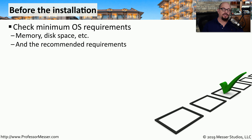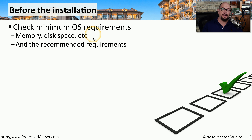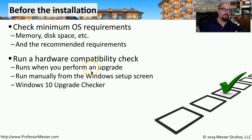Before even starting the installation, there's still a lot of work you could do to make sure the installation is going to go smoothly. The first thing is to check the minimum operating system requirements for memory, disk space, and any other hardware you might be using on that system. There's a hardware compatibility check that you can run directly from the Windows installation media. In Windows 10, this is called the Windows 10 Upgrade Checker.